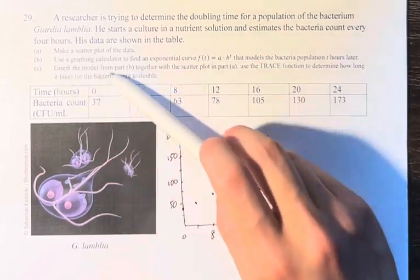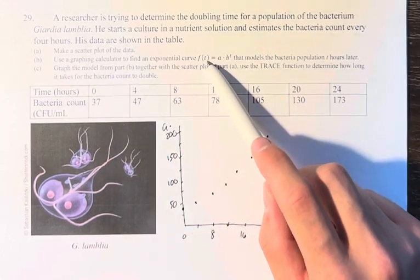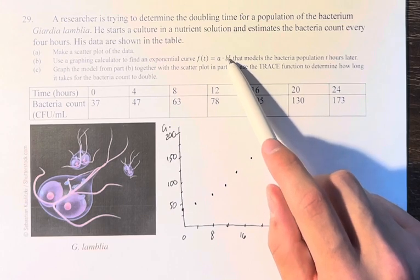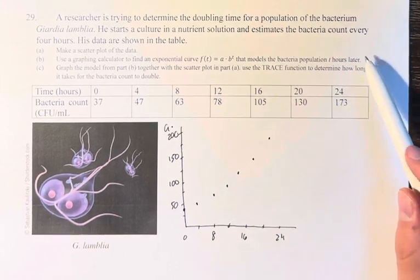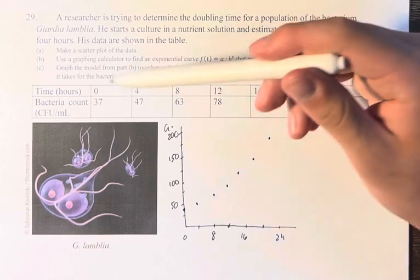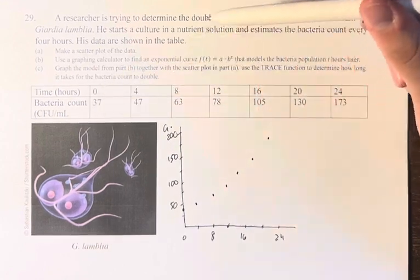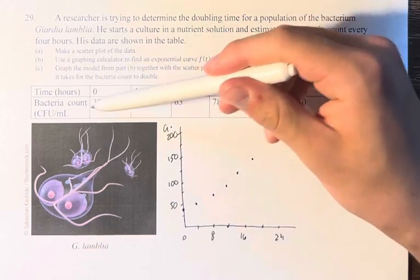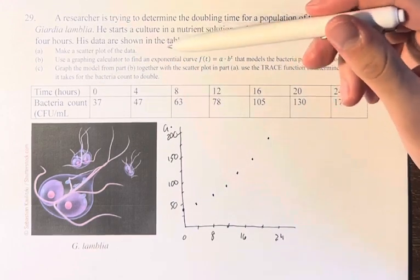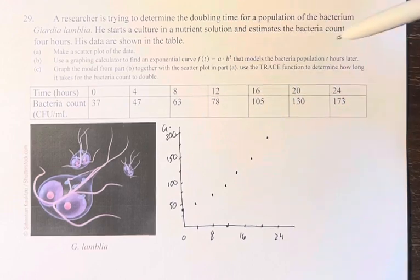Next, you're asked to use a graphing calculator to find an exponential curve f(t) = a * b^t that models the bacteria t hours later. So what you do is on a graphing calculator, or I have it on a website that provides the same exponential regression, you plug in all of your points and then you find the exponential regression equation.